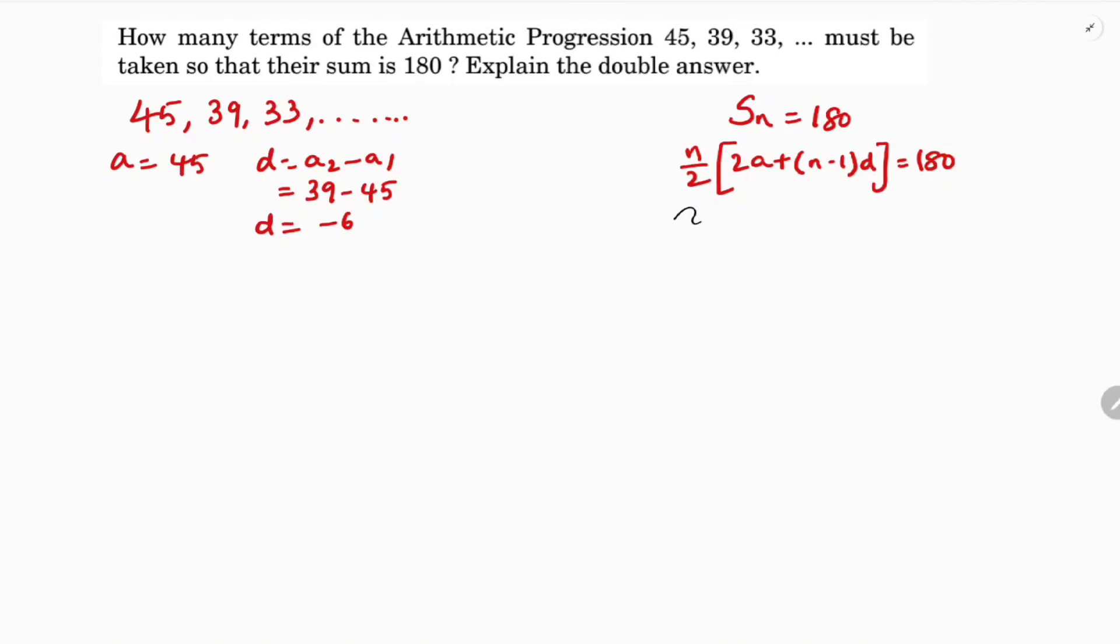See, whenever they'll give the sum, sum is given here, and if they'll ask the value of n, mostly you'll get a quadratic equation. We need to simplify the quadratic equation. So n by 2, 2a, a is 45, n minus 1 into minus 6.